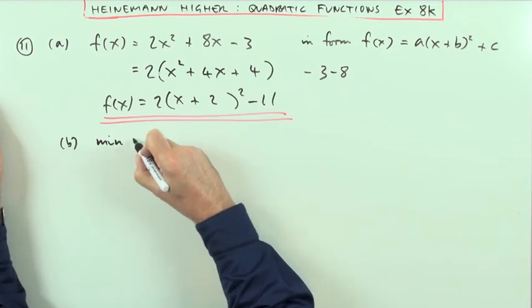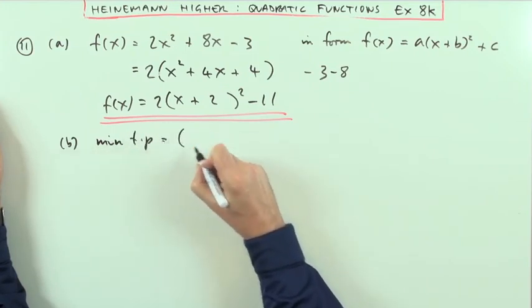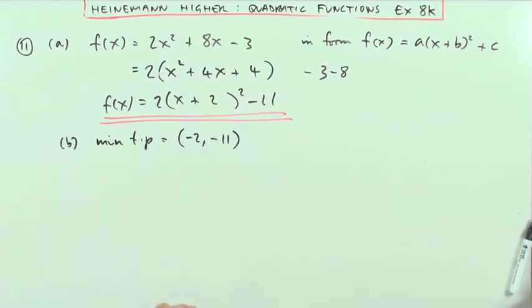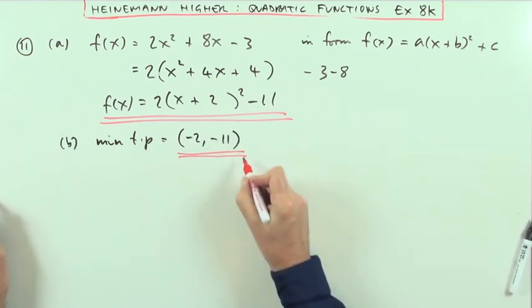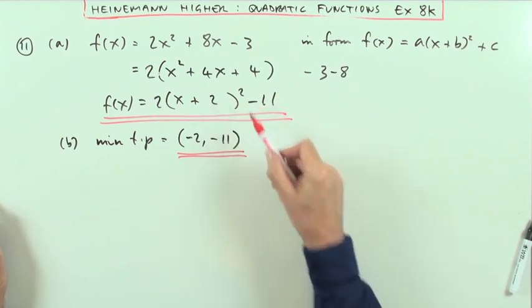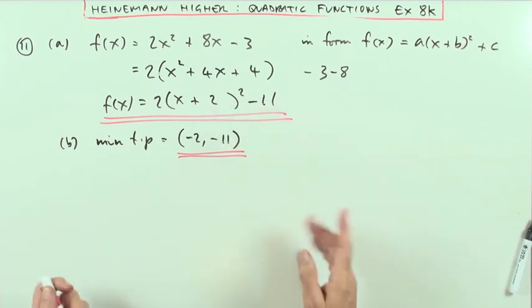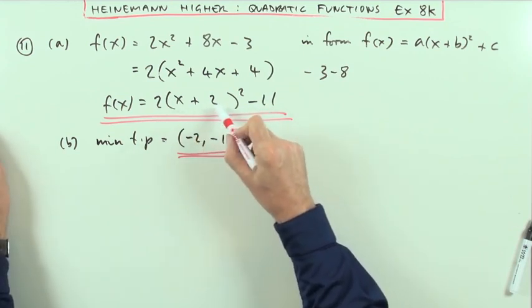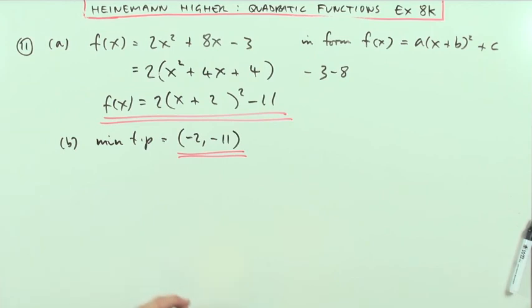So the minimum turning point is simply going to be negative 2, negative 11. And it's acceptable just to read that straight from the completed square form. If you wanted, you could spell out, you could say, y equals negative 11 when x minus, x plus 2 equals 0. So x equals negative 2. Well, that would do. There it is. Number 11.